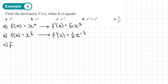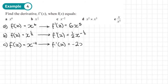Part c: f of x equals x to the power of negative 2. We multiply by the power, giving negative 2x. Then subtract 1 from the power — be careful, it's not going to be negative 1. We subtract 1 from negative 2, so it becomes negative 3. So f dash of x equals negative 2x to the power negative 3.